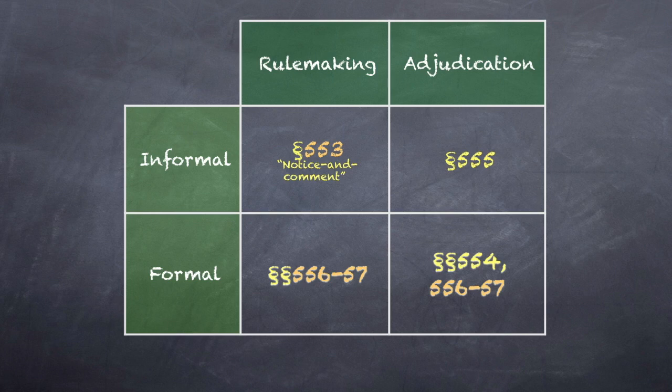This table is one that we have seen before and will return to again. Every process leading to a final disposition in any agency matter falls within one and only one of the four squares. In three of the four squares, those containing the orange section numbers, detailed procedures are set out in the APA. In one of the squares, the informal adjudication square, the APA prescribes very little.